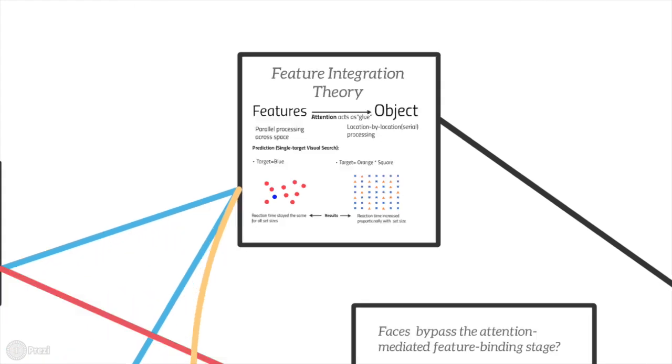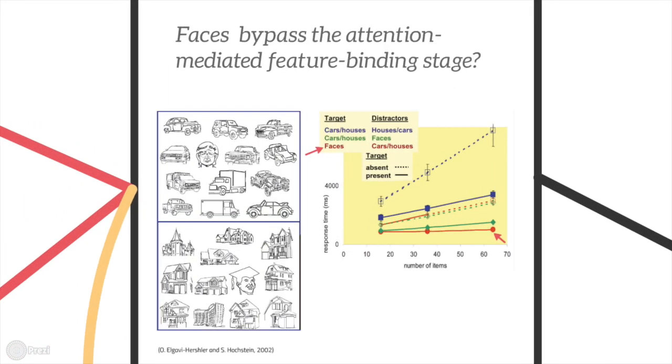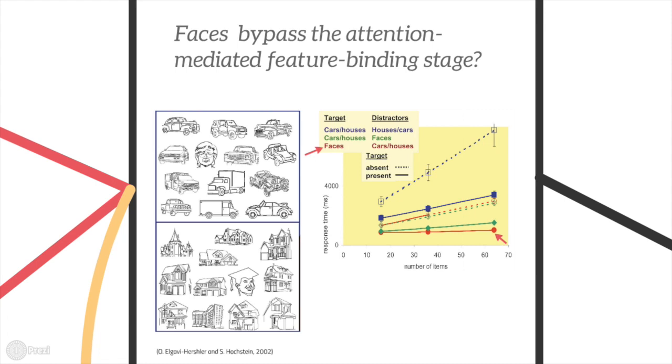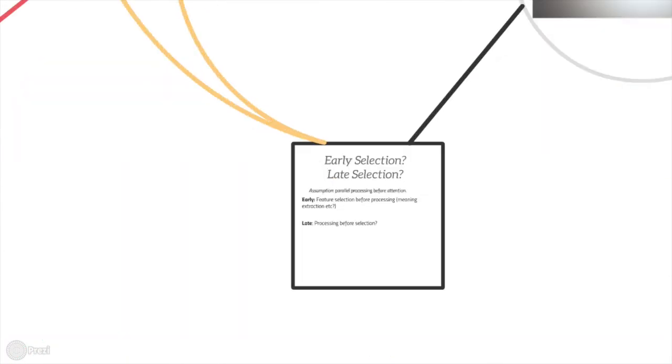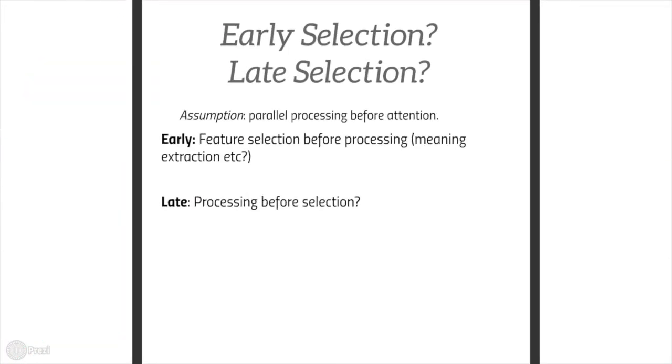However, other visual search experiments using more complex stimulus revealed that face detection may bypass the attention-mediated feature binding steps. This leads to the question of whether attention selects the sensory input before or after the high-level processing.